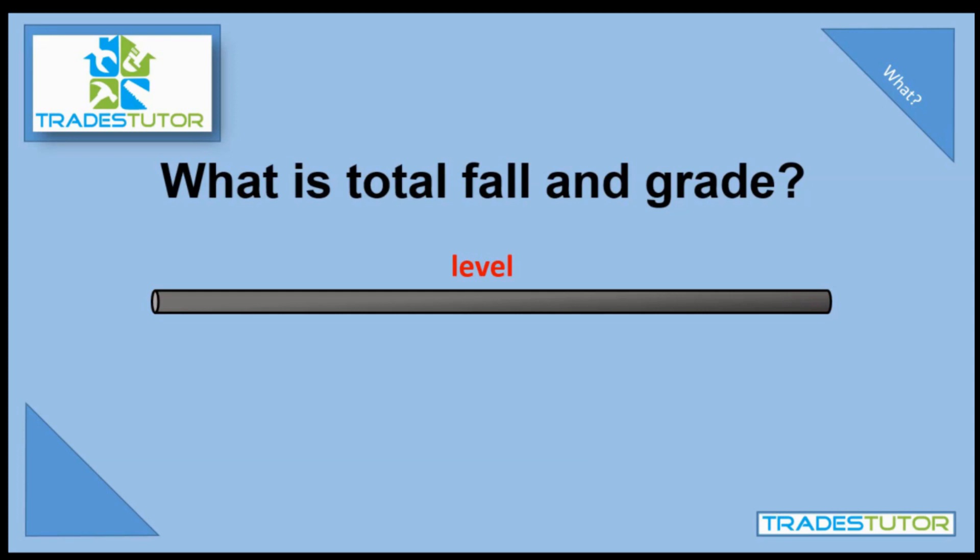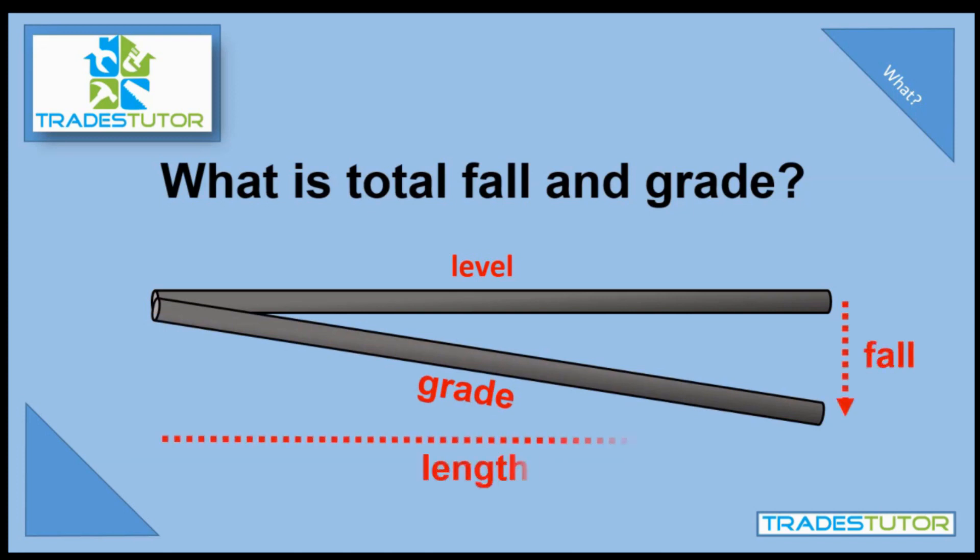How would you calculate that? What you'd be trying to figure out is the pipe was going to grade down a certain amount, and in that certain amount you would fall given a certain length. So we're going to take all these variables and we're going to figure out how far the pipe is going to fall given a certain length and given a certain grade.